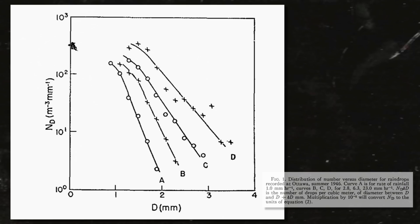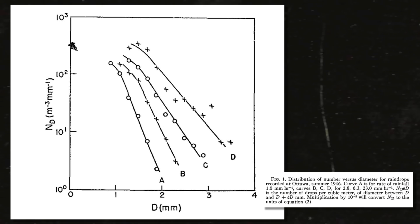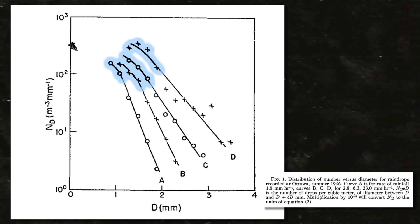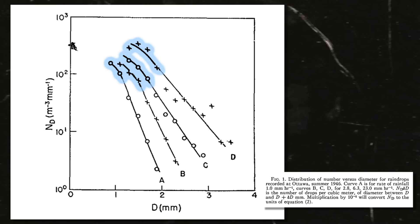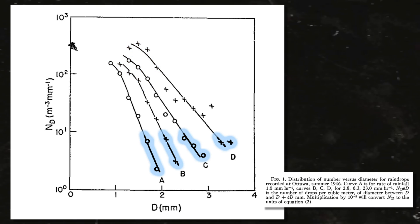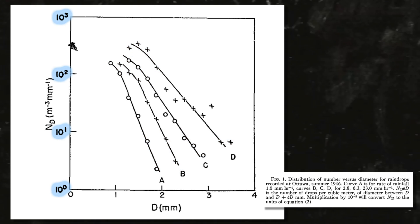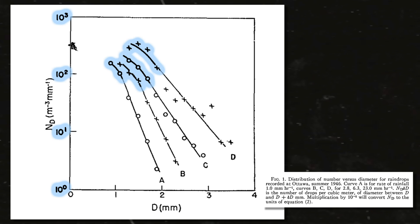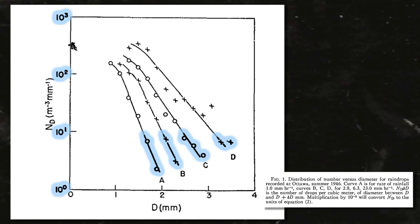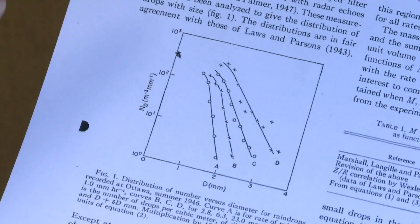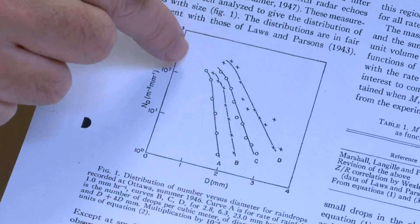What they found is that with different rates of rainfall - this is the number of drops versus drop size - there were lots of little drops and then many fewer bigger drops. This is a log scale, so this is actually a hundred times as many drops of one size as there are of another. Because this comes out as a straight line on this scale, it's actually an exponential distribution: lots and lots of little ones and not very many big ones.